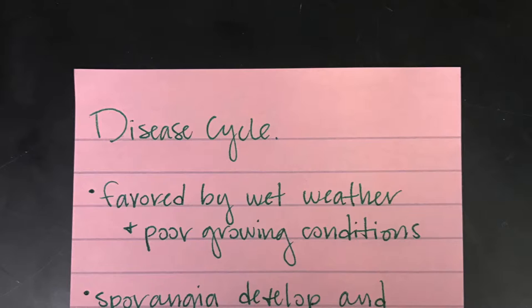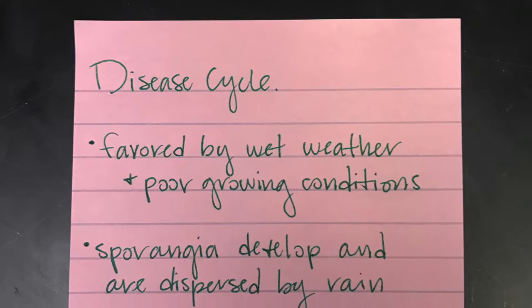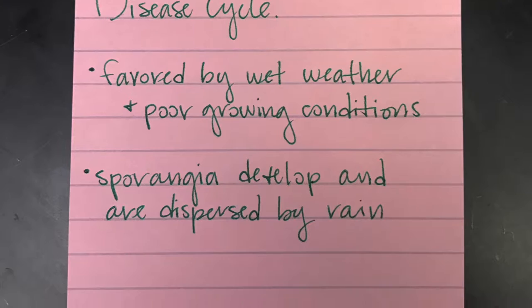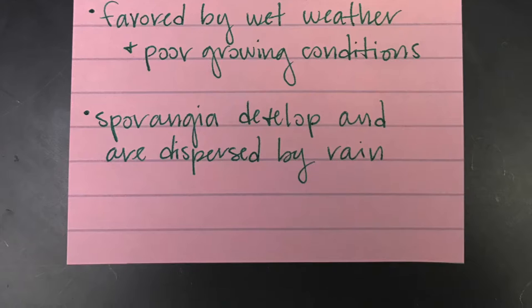The disease is favored by wet weather and plants that are already weakened by poor growing conditions. Sporangia, which are the asexually formed reproductive structures, develop during the summer and spores are dispersed by rain to develop new sporangia on new leaves.